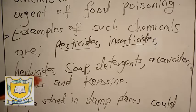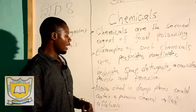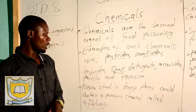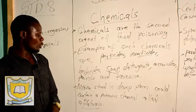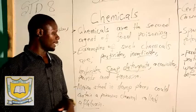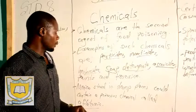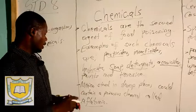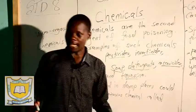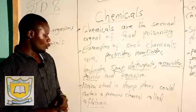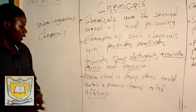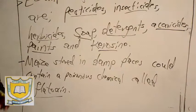Herbicides are used to control weeds in our farms and are also dangerous chemicals. We have our normal soap that we use to wash clothes and clean utensils at home — also another dangerous chemical. Then we have detergents that are also used for cleaning, very dangerous. Caricides that are used to spray animals are very dangerous chemicals when mishandled. We also have paint and kerosene.